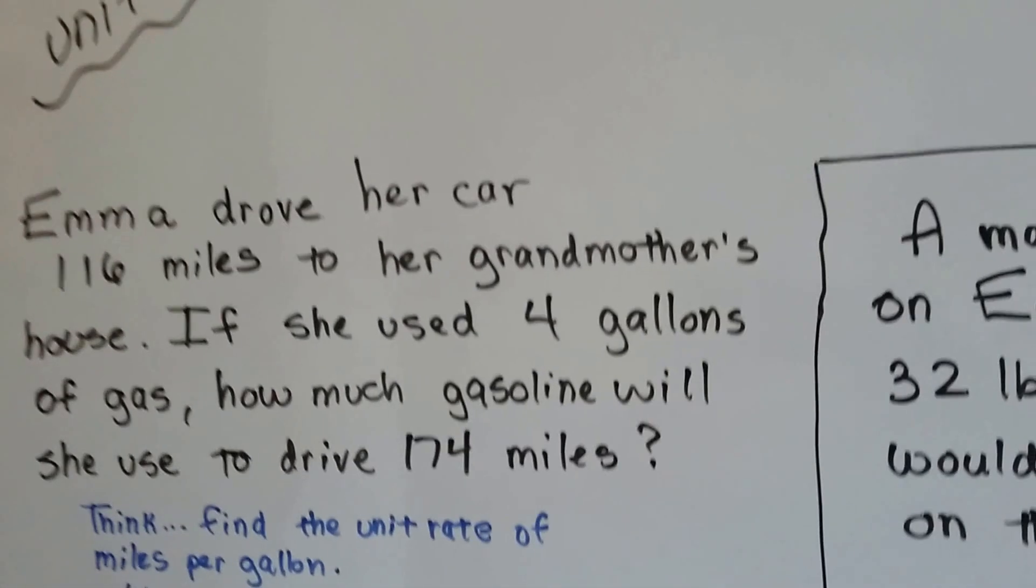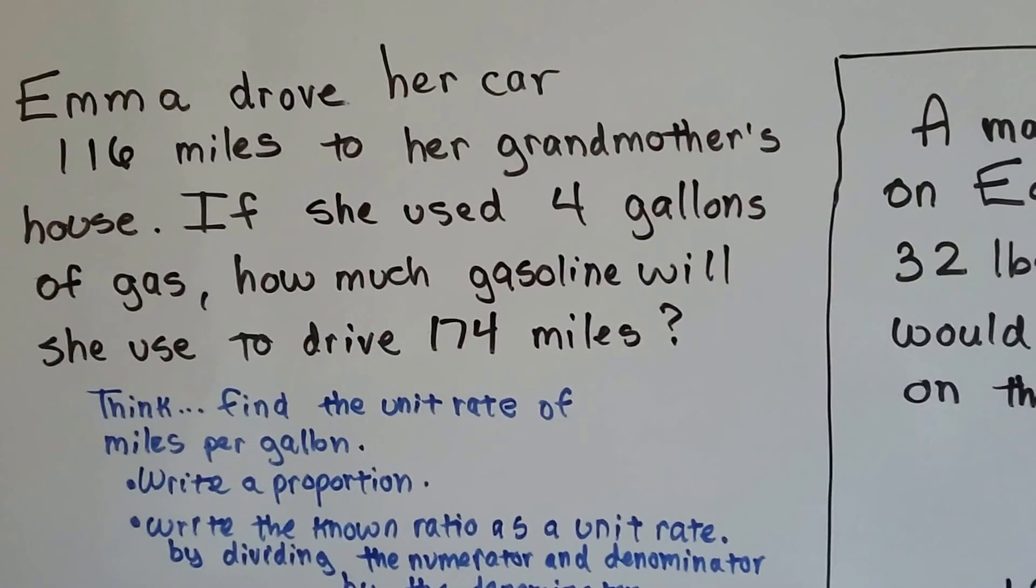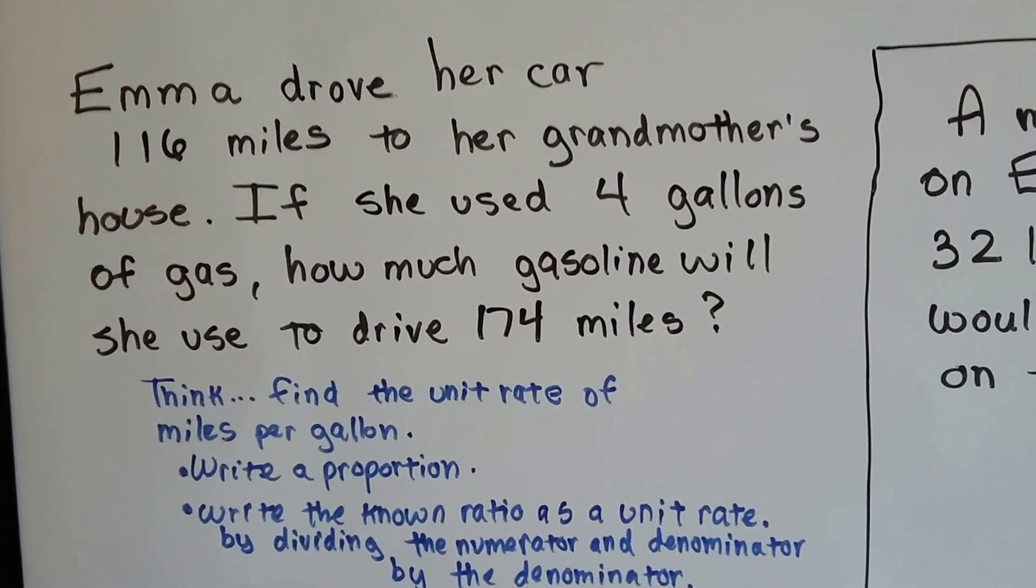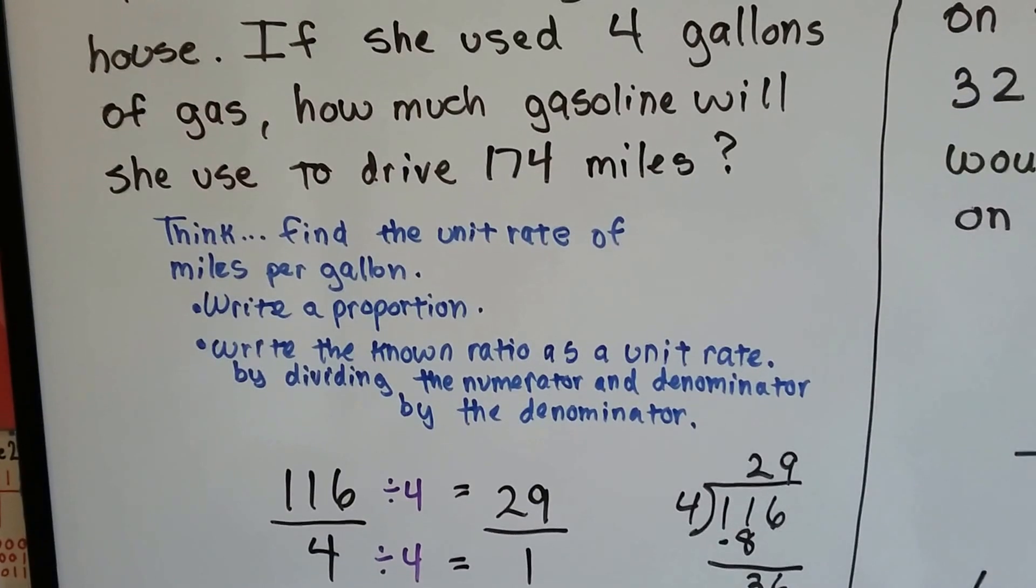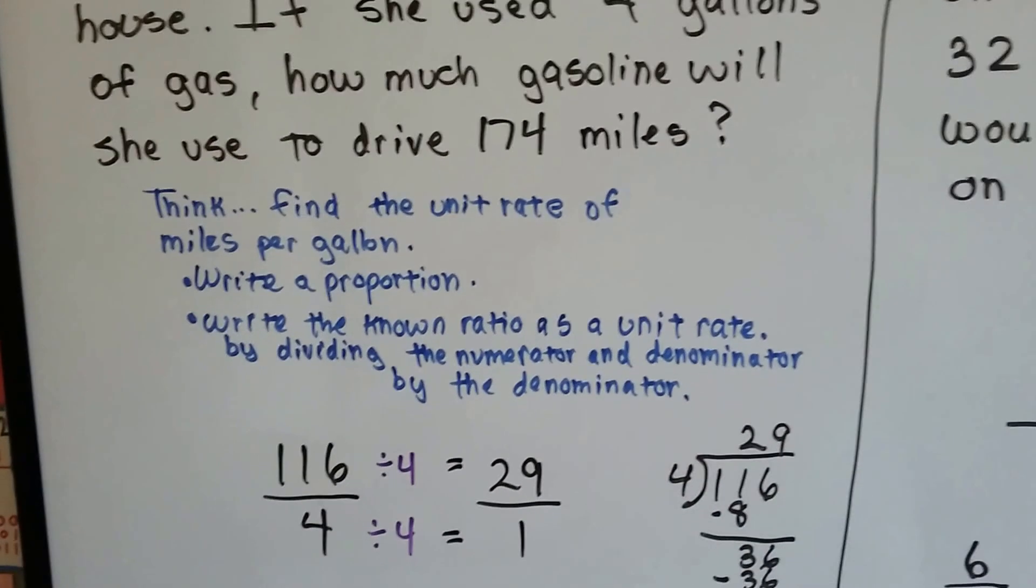Emma drove her car 116 miles to her grandmother's house. If she used 4 gallons of gas, how much gasoline will she use to drive 174 miles? So we need to find the unit rate of miles per gallon for her car, and we write a proportion.